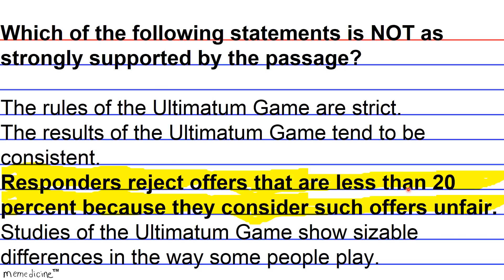Answer C is least supported because while the passage mentions people who feel they should offer 50% because it is fair, the passage provides no analysis of the decision-making process involved in responders specifically. The passage focuses more on the decision-making process of proposers rather than responders, so this claim cannot be strongly supported.